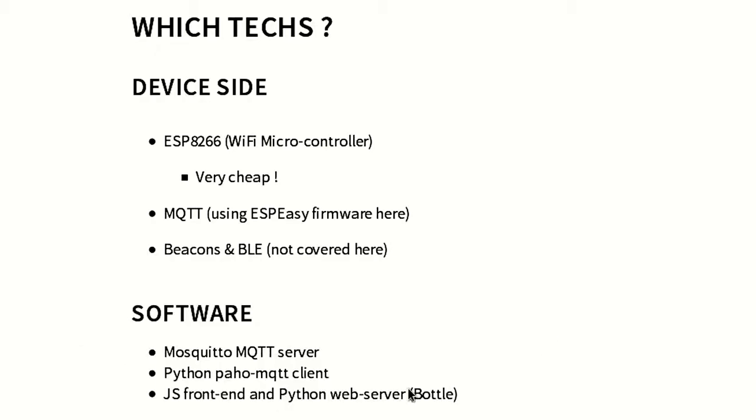On the software side, we will use the Mosquitto MQTT server, which is basically the standard now. There is also a Python MQTT client for the Mosquitto server. We will use JavaScript for the front-end on a little web app we will make, and Python for the web server and the event server.